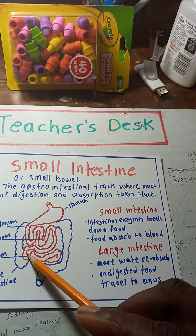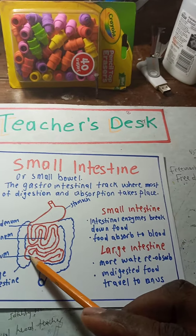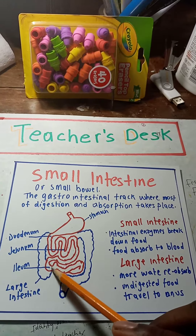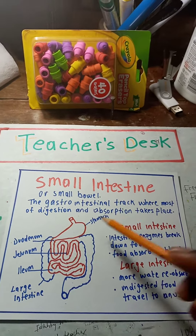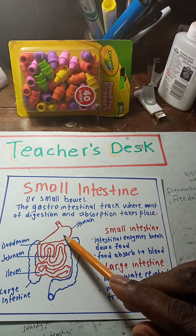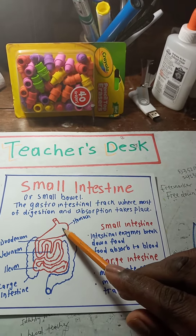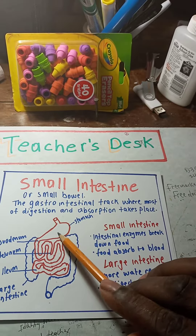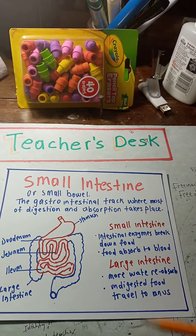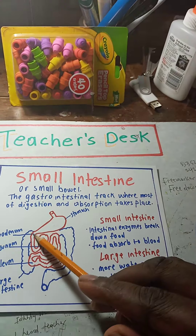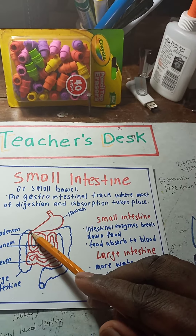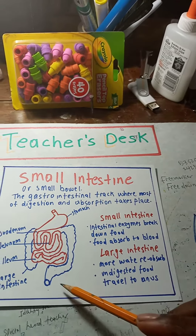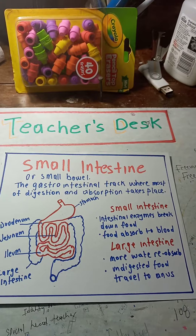Most of the nutrients your body needs are absorbed in the ileum. When you eat, the food goes into your stomach to start the breaking-down process before it goes through the duodenum, jejunum, ileum, and then into the large intestines.